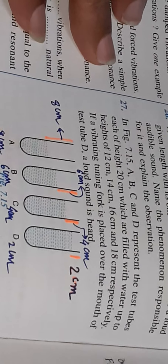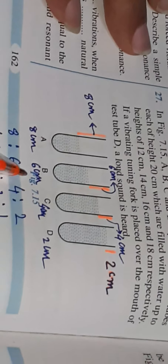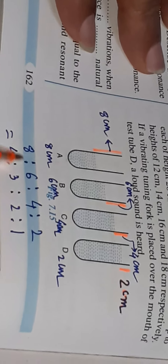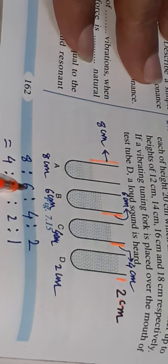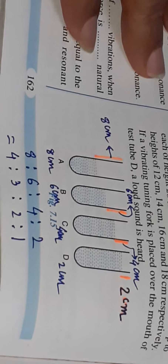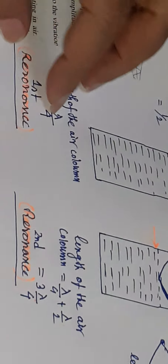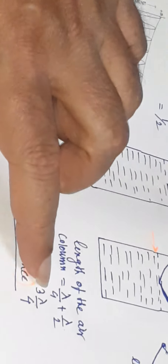Now let us determine what A, B, C are. The air column height for tube A is 8 cm. The air column height for another column is 6 cm. The air column for C is 4 cm. The air column is 2 cm for the next step, and 1 cm and 3 cm for others.